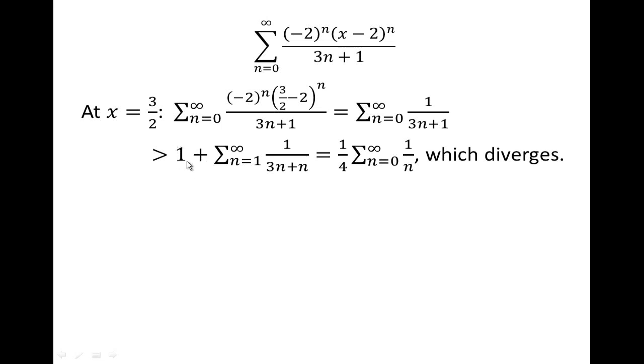I pulled off the very first term there. So that very first term, if you let n be 0, you get 1 over 3 times 0 plus 1. That's the very first term. Thereafter, though, I can do this maneuver just fine. So I replace 1 by n. That makes my denominator grow.